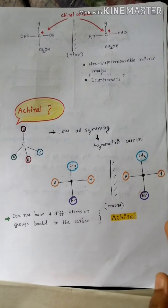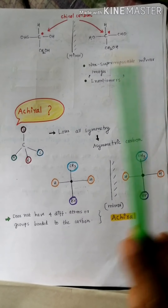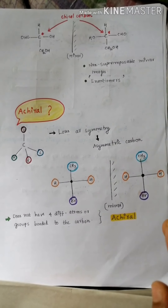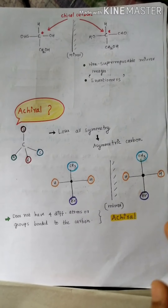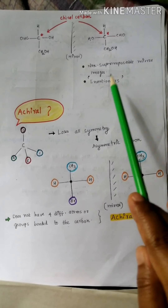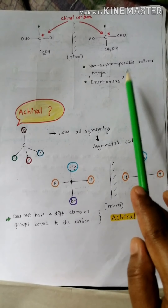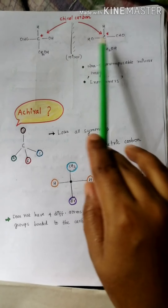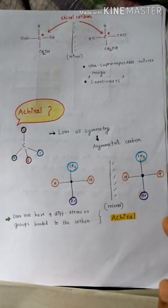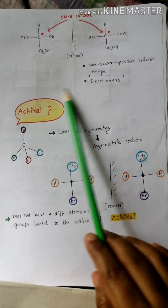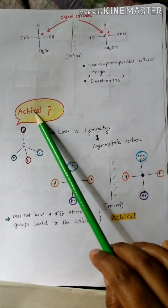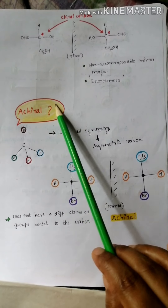These kinds of compounds are generally called enantiomers. Enantiomers is the term used to define these kinds of compounds.